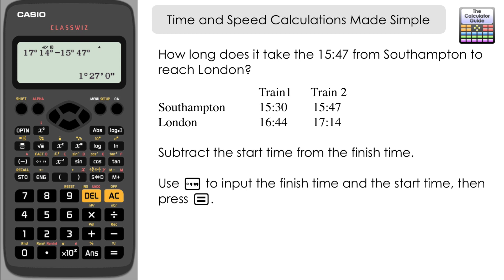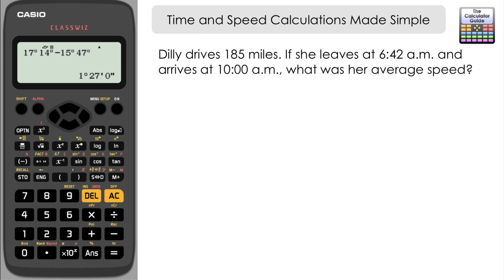Another way in which the degrees minutes and seconds button can help us is with working out problems with average speed. The first question here: Dilly drives 185 miles. If she leaves home at 6:42 a.m. and arrives at 10 a.m., what was her average speed? This is a speed problem. We need to find out what the speed was—her average speed. Well, that is going to be her distance divided by time. So speed is distance divided by time.